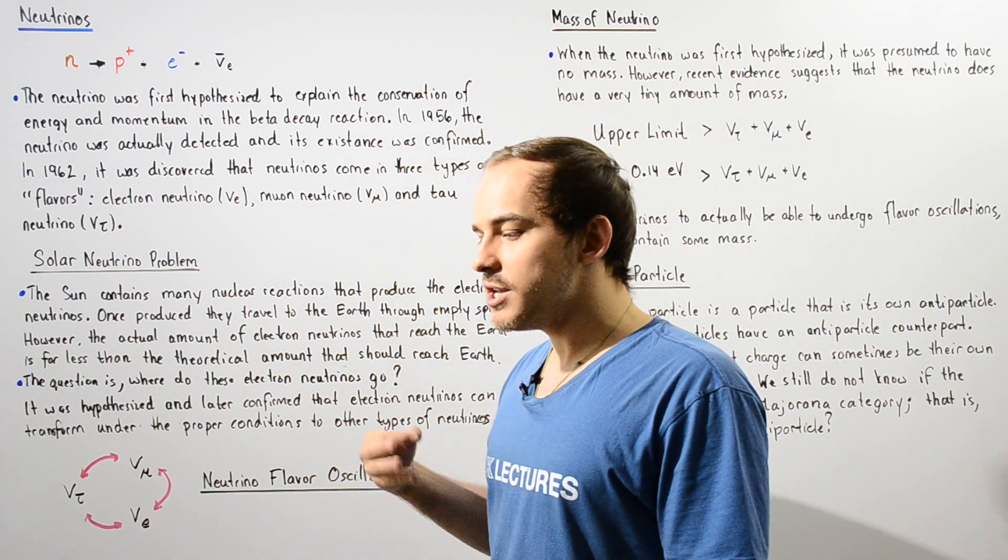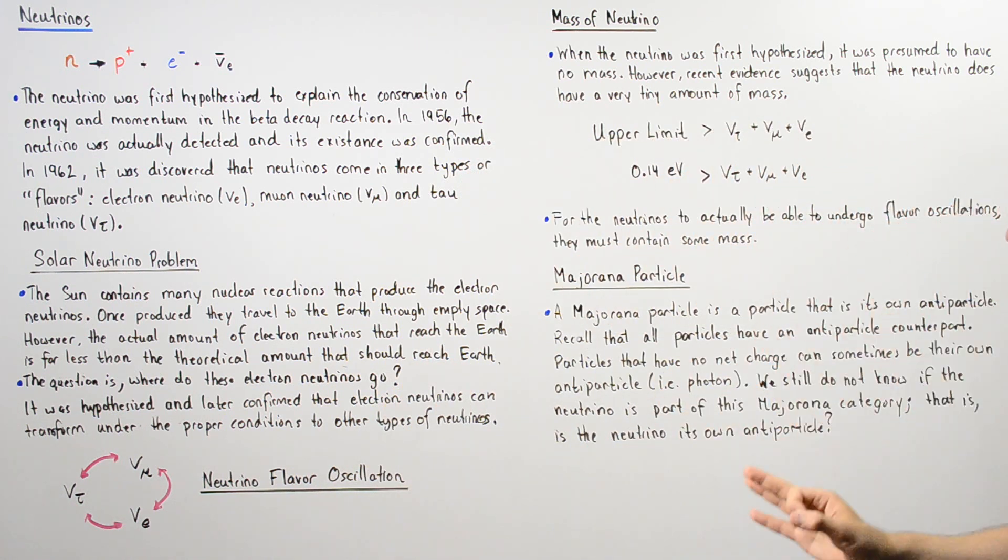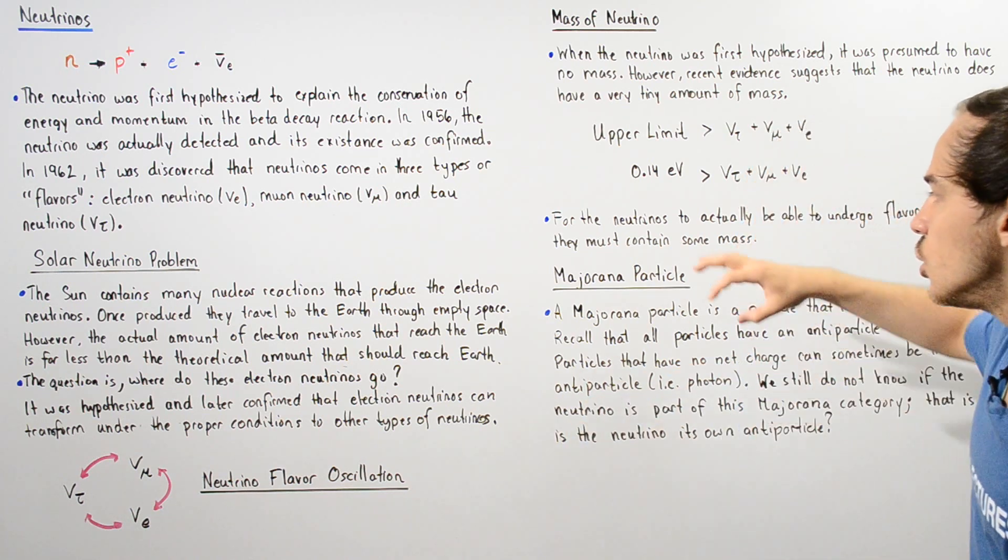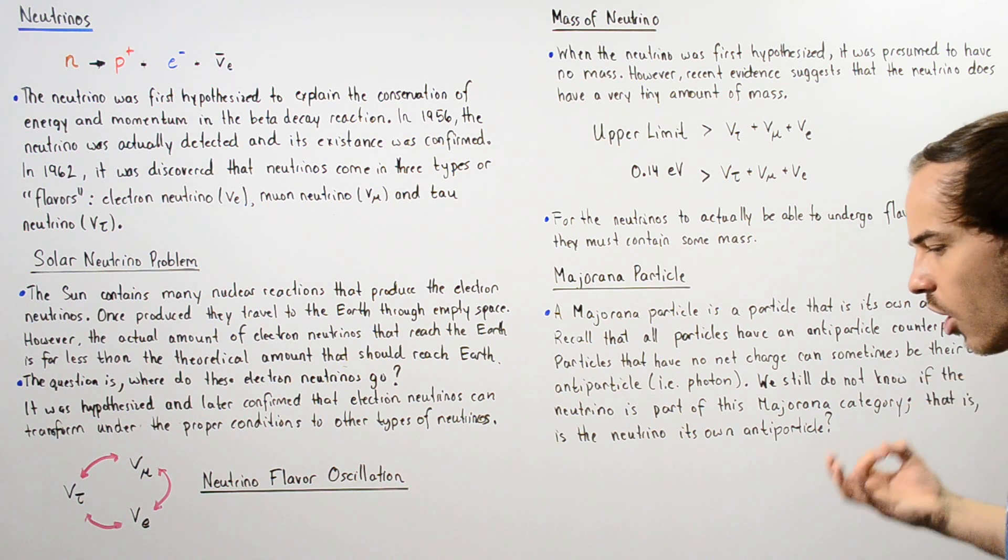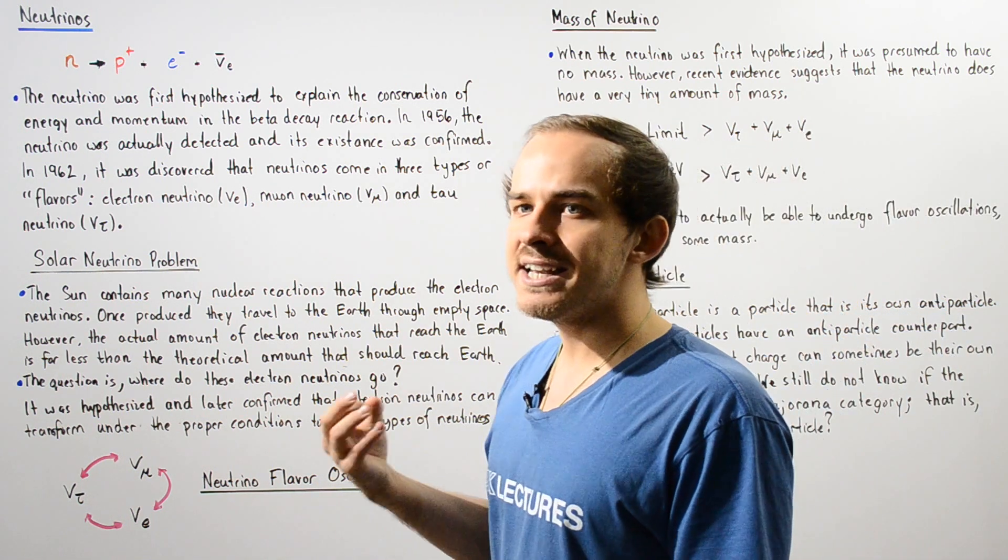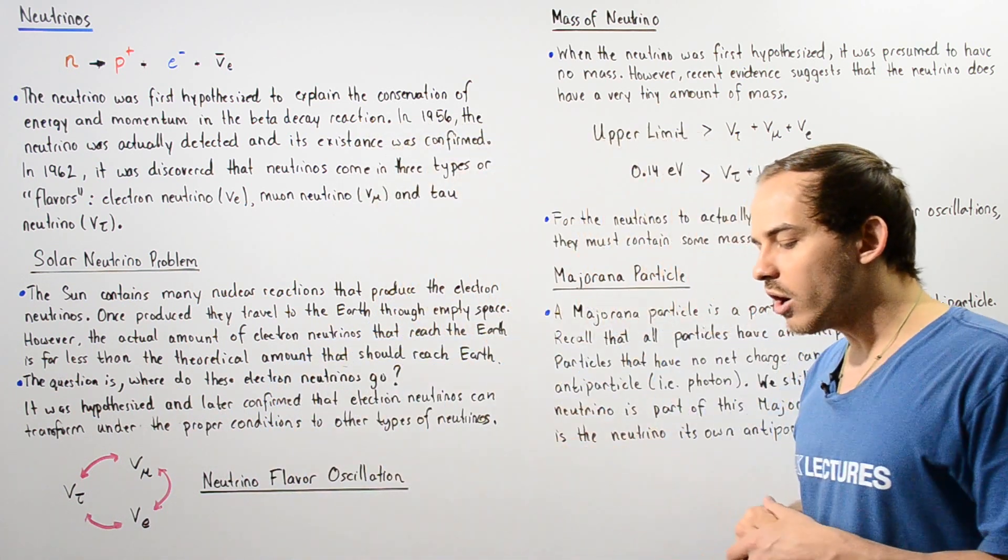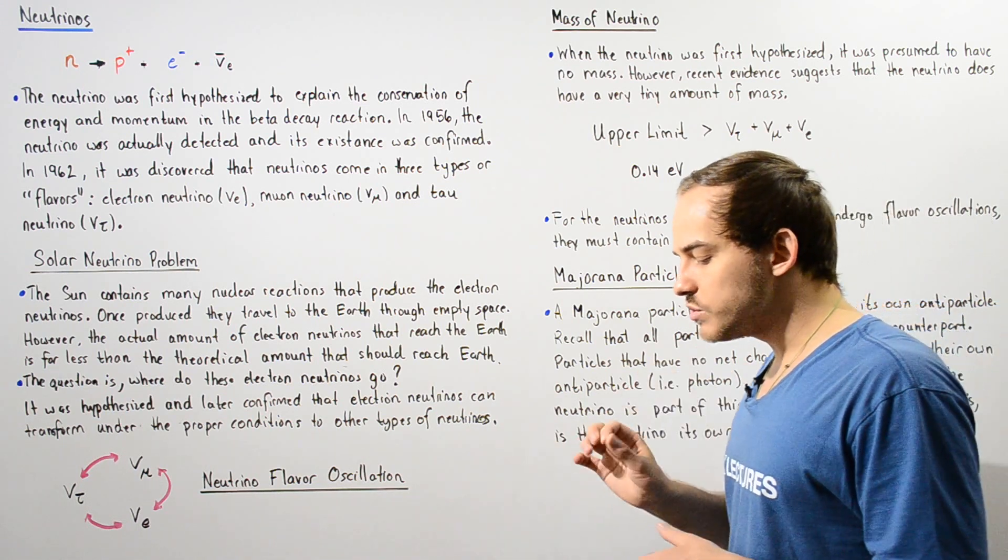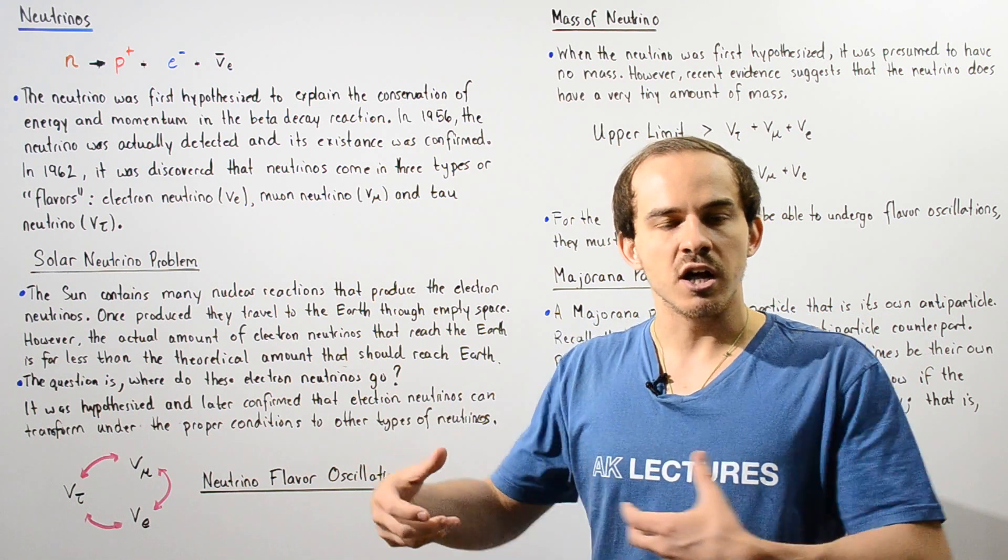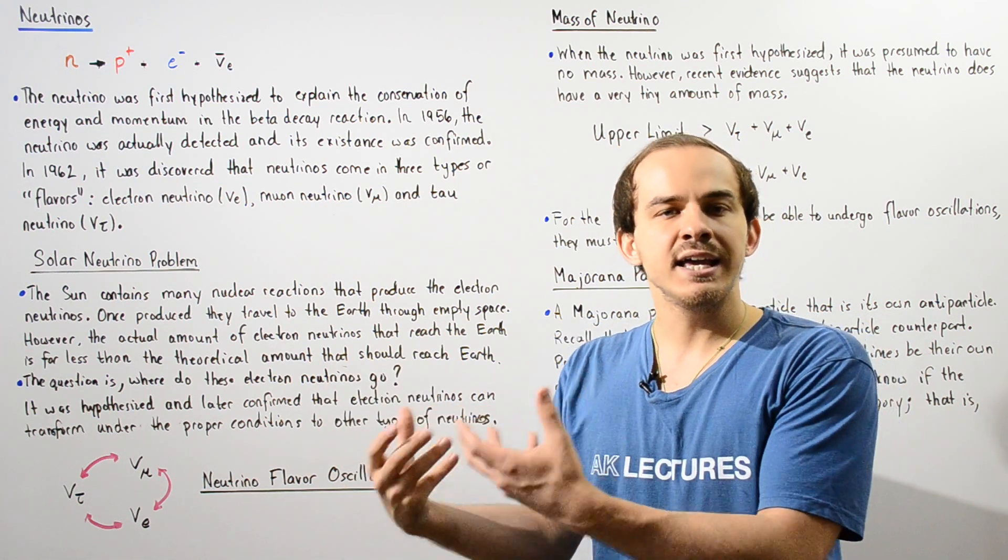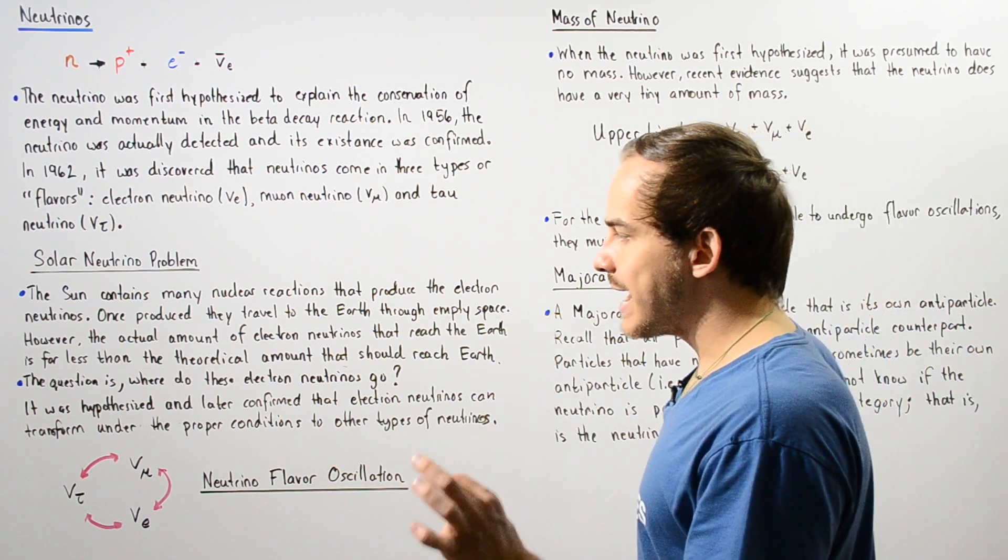Now, another problem, another question that still has not been answered is, is a neutrino part of a category of particles known as the Majorana particle? The Majorana particle is basically a particle that can act as its own antiparticle. And two examples of such particles is the photon and the Z-boson. So basically, the photon can act as its own antiparticle. And when two photons combine, they can annihilate one another. So that's exactly what we mean by an antiparticle.